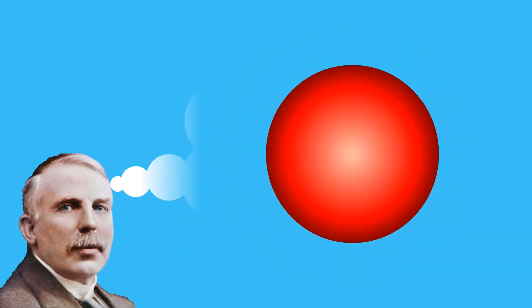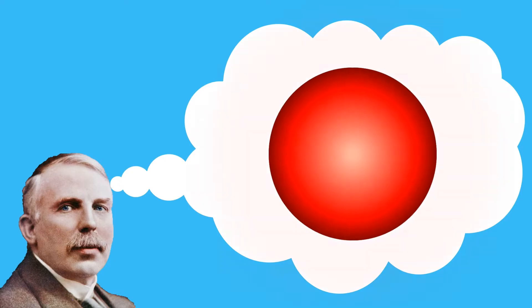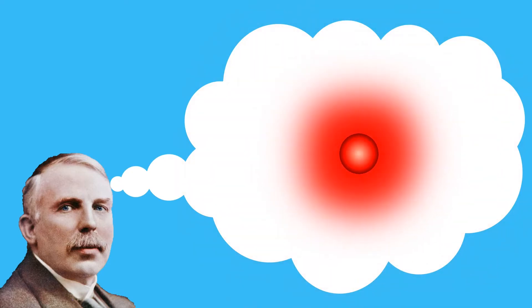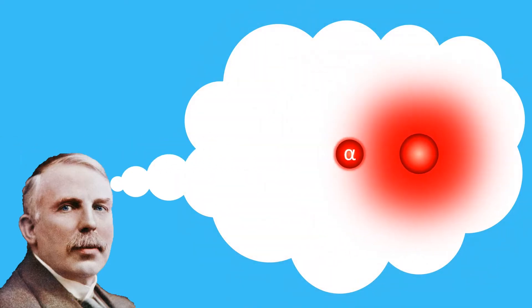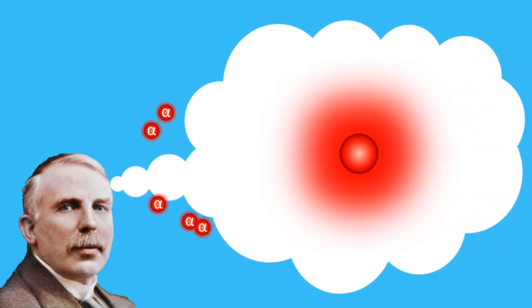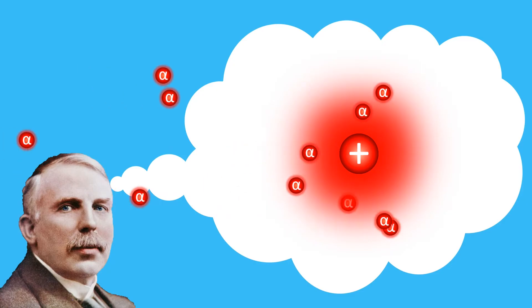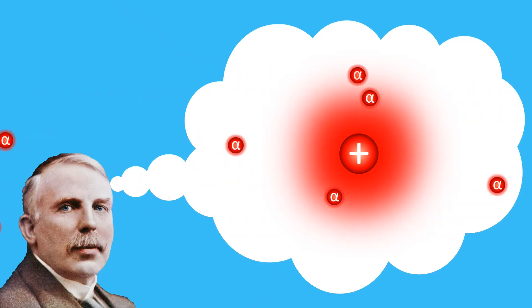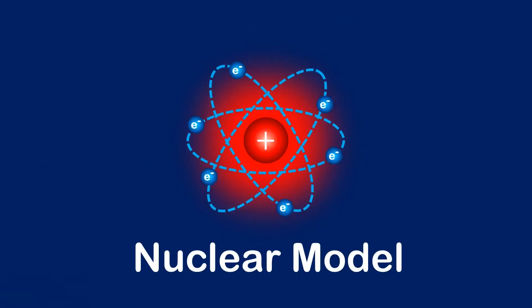So Rutherford deduced three things about the atom. Firstly, the nucleus must be very very heavy, because if it wasn't, the alpha particle would knock away the nucleus like a snooker ball. Secondly, the nucleus must be positive because it deflected positive alpha particles. And thirdly, it must be very small because most of the alpha particles missed it completely. Rutherford called this the nuclear model.